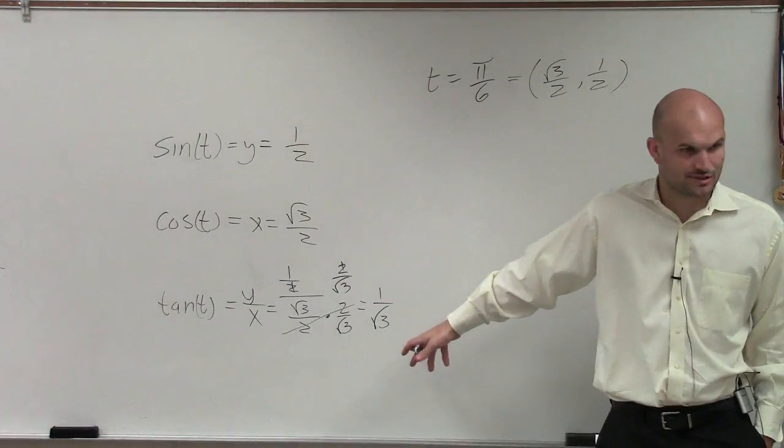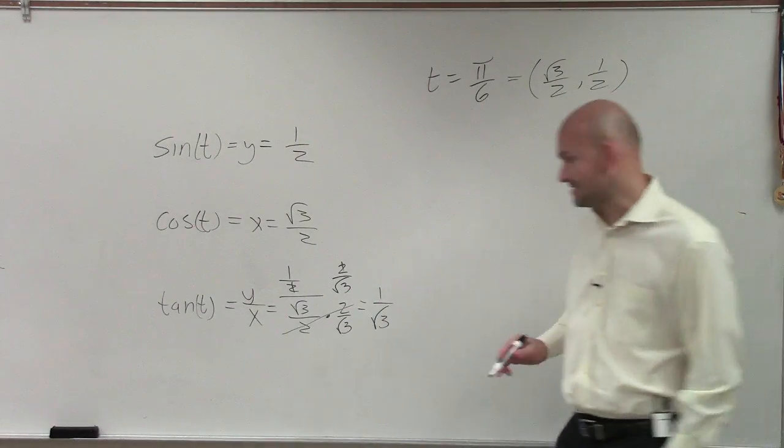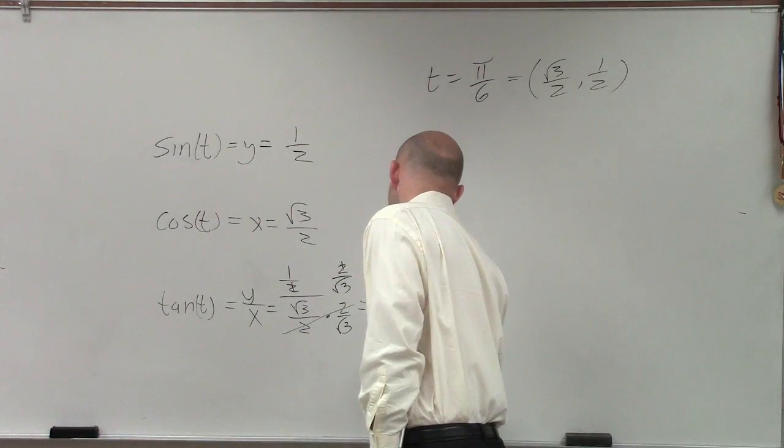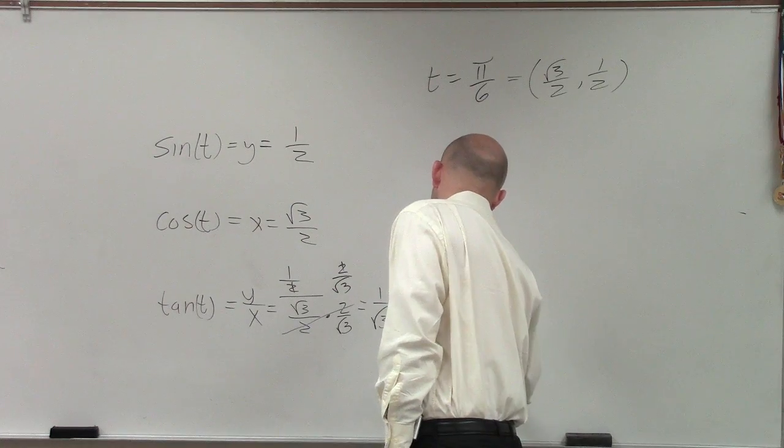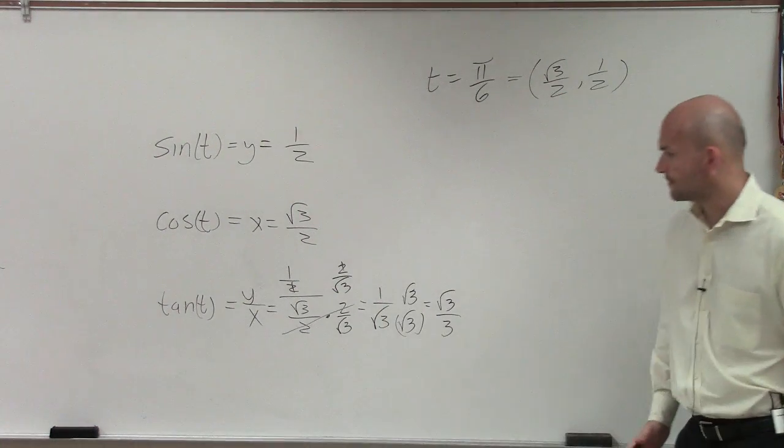But we can't leave an answer with square root of 3, right? Got to rationalize the denominator. So you rationalize the denominator. So therefore, now we're left with the square root of 3 over 3.